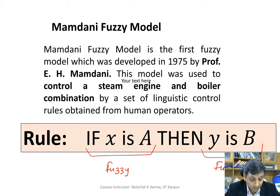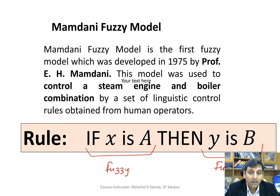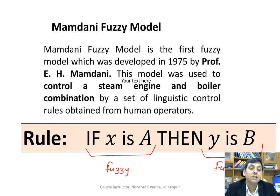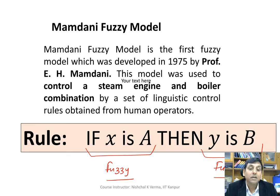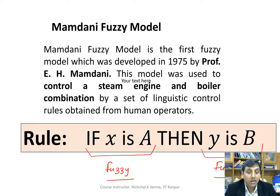In other words, the Mamdani model is used when we have a set of fuzzy rules where the premise part of the rule is fuzzy and the consequent part of the rule is also fuzzy. Please also note that the Larsen model, which is also one of the fuzzy models, uses the same kind of if-then rules.